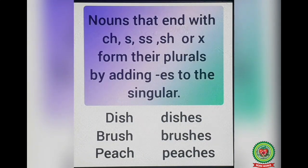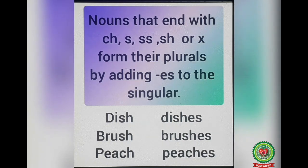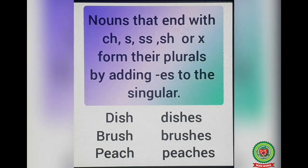The second rule is: nouns that end with CH, S, SS, SH, or X form their plurals by adding ES to the singular. For example, dish becomes dishes, brush becomes brushes, peach becomes peaches.